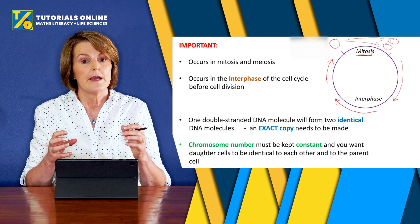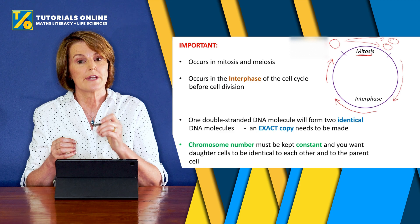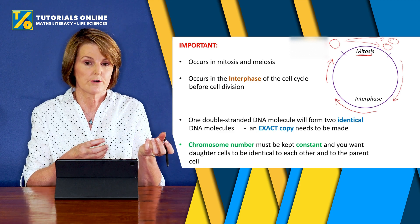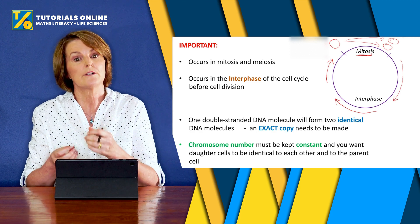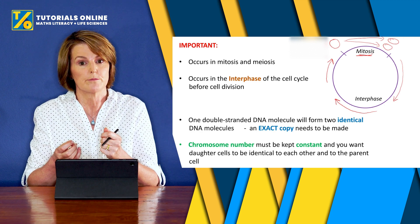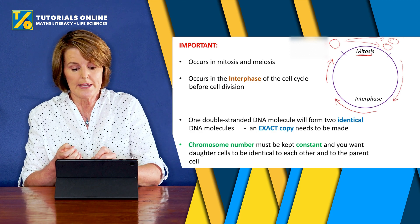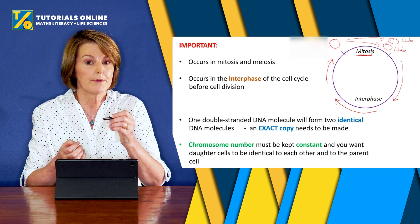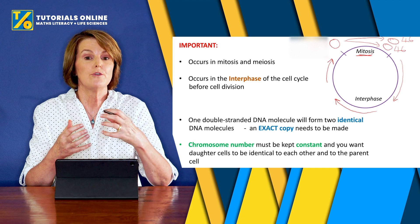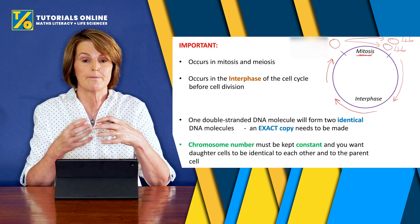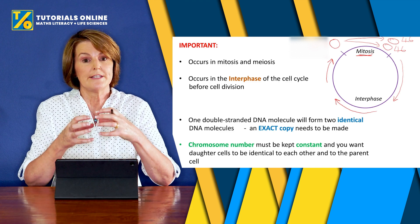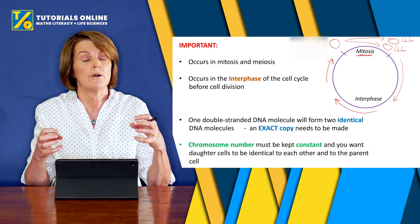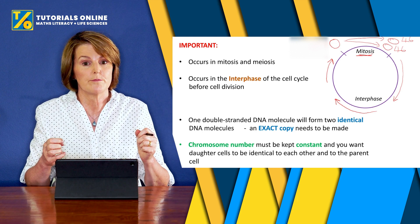After mitosis, you want the chromosome number to stay the same. For example, in humans we have 46 chromosomes, and you want the daughter cells to also have 46 chromosomes. It's here in interphase that DNA makes a copy — it doubles — so that when the cells divide, each cell will have 46 chromosomes.